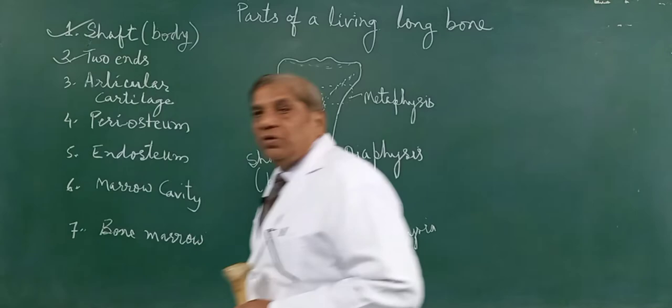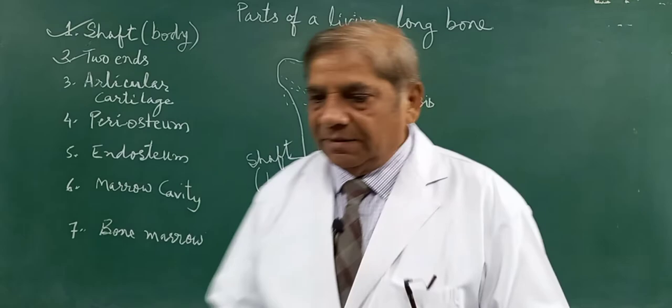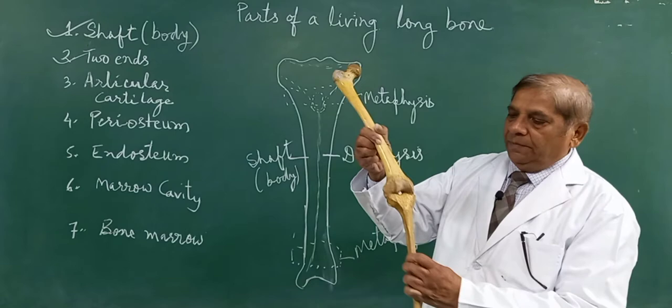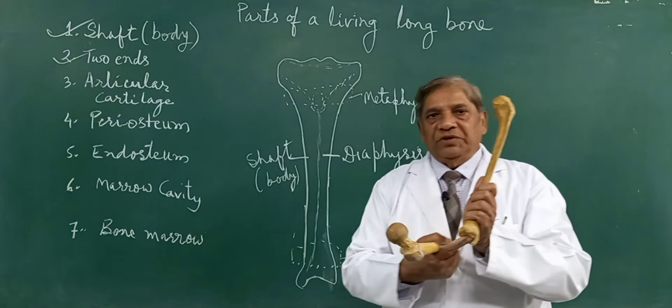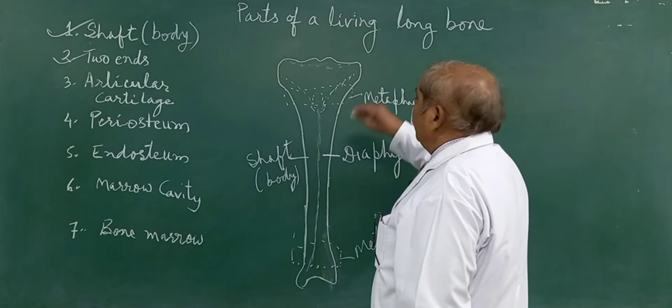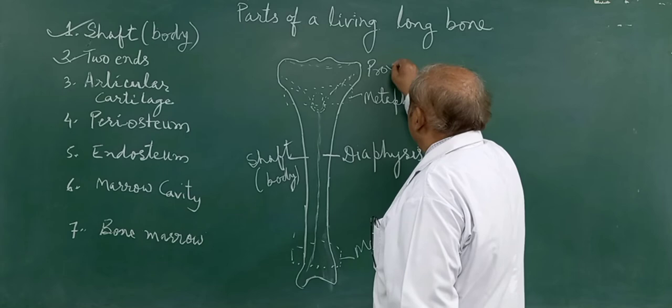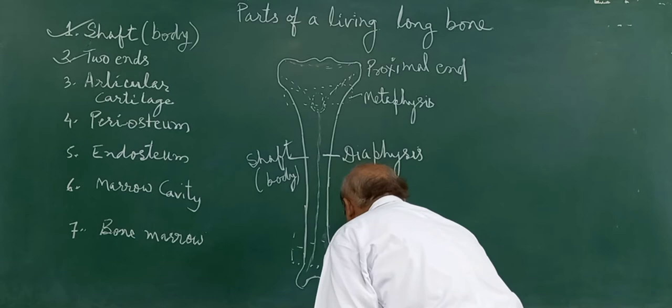Let us come to the second part of a bone — these are the two ends. This will be one end and this is another end. At the end, the bone is expanded because it forms the joint with the other bone. Here is the tibia and this is the femur — the upper end of the tibia will form a joint with the lower end of the femur, what is called as the knee joint. Similarly, the lower end of the tibia will form a joint with the talus, called as the ankle joint. The upper end is called as the proximal end, and the lower end is called as the distal end.